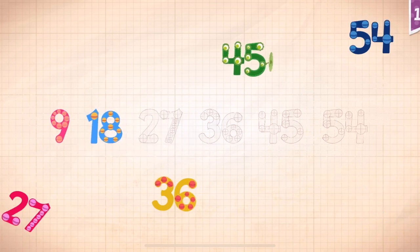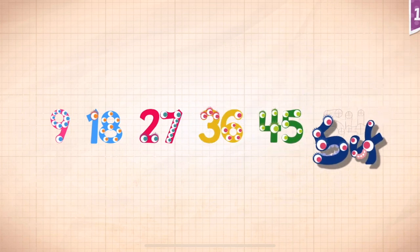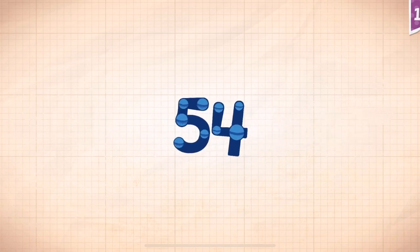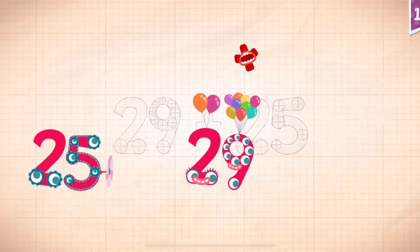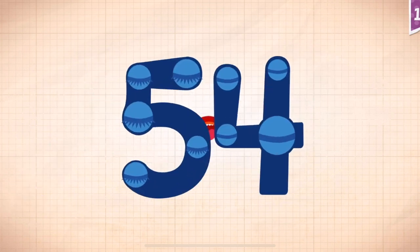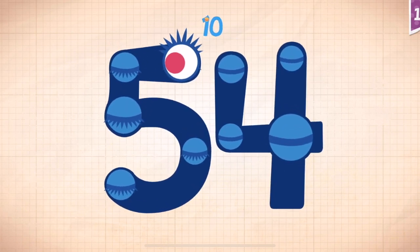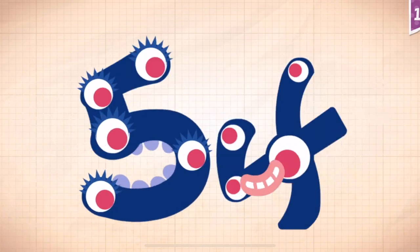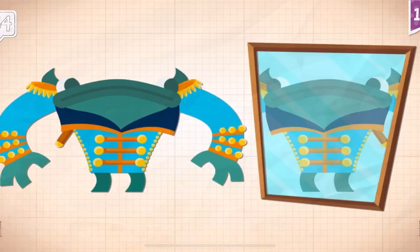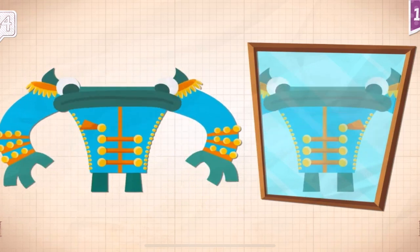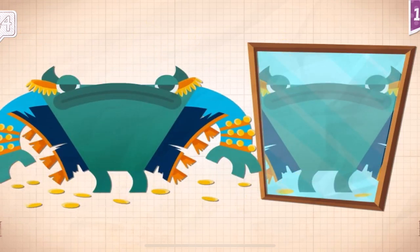Count by nines: 9, 18, 27, 36, 45, 54. Now 29 plus 25 equals 54. Touch the monster: 10, 20, 30, 40, 50, 51, 52, 53, 54. Grok had fifty-four buttons on his new jacket.